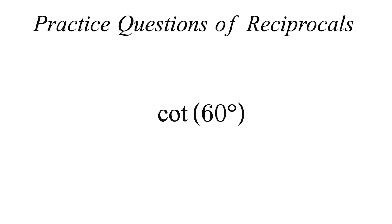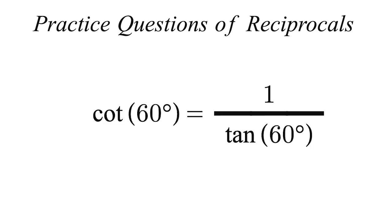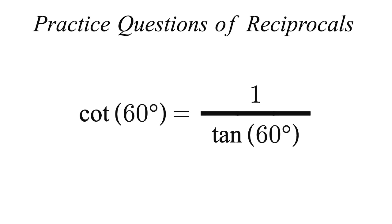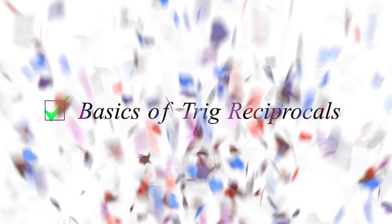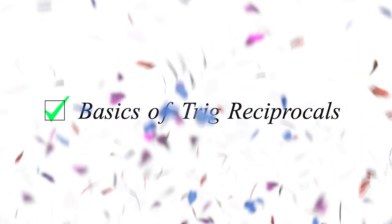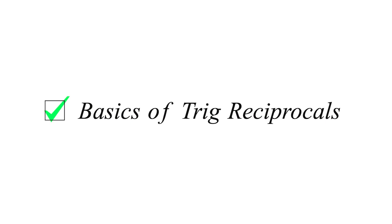Find cot 60. Cot 60 is equal to 1 over tan 60, which is equal to 1 over root 3. And that's essentially the basics of reciprocal functions. But they do have different uses that we'll cover in another video.